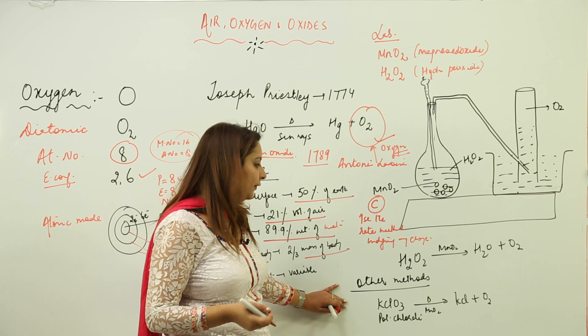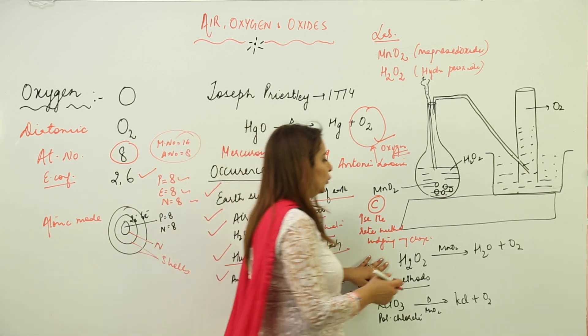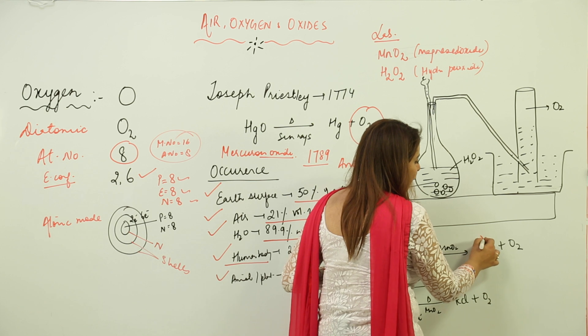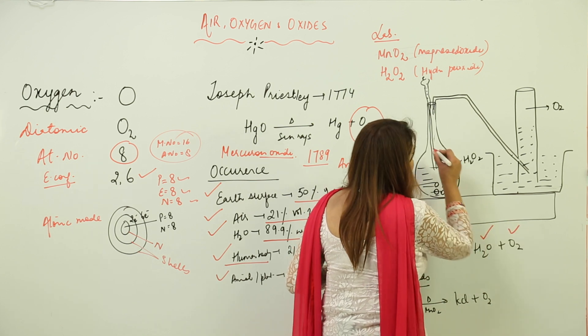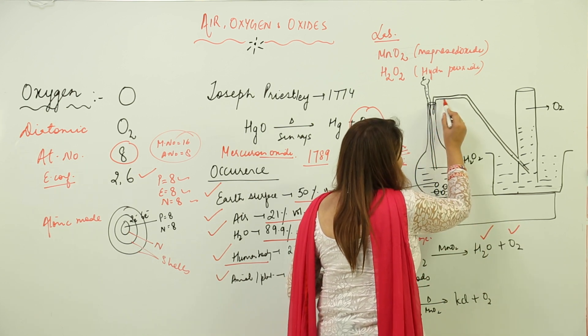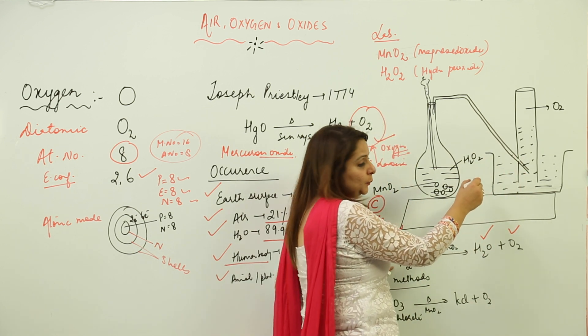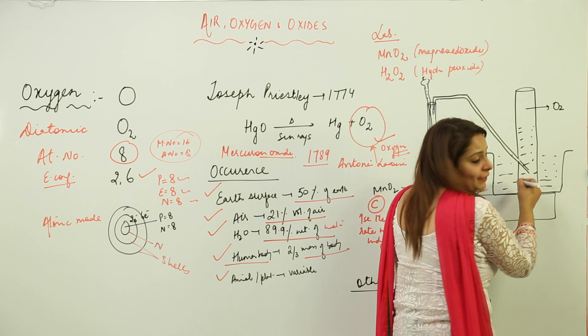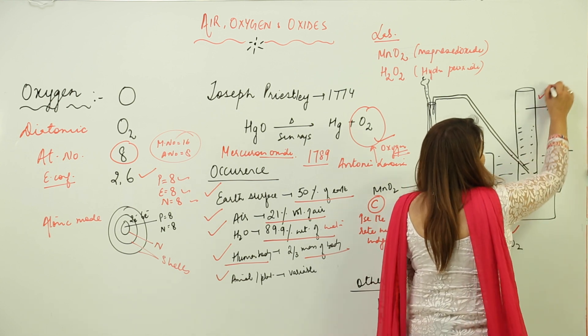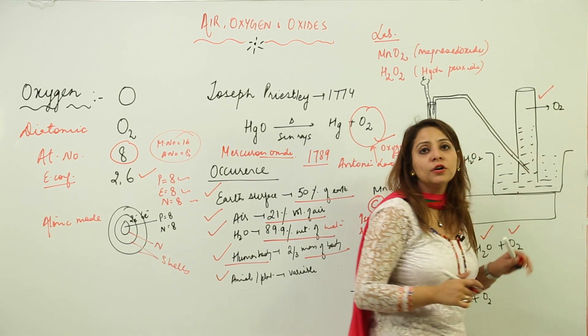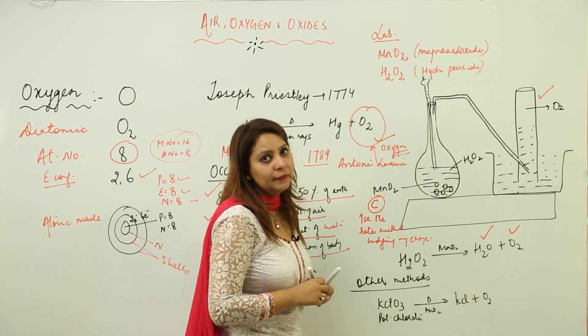So H2O2, in presence of MnO2, decomposes to form water and oxygen. This oxygen gas passes from this tube into the trough, and due to downward displacement—because it is lighter than water—it gets collected over water.